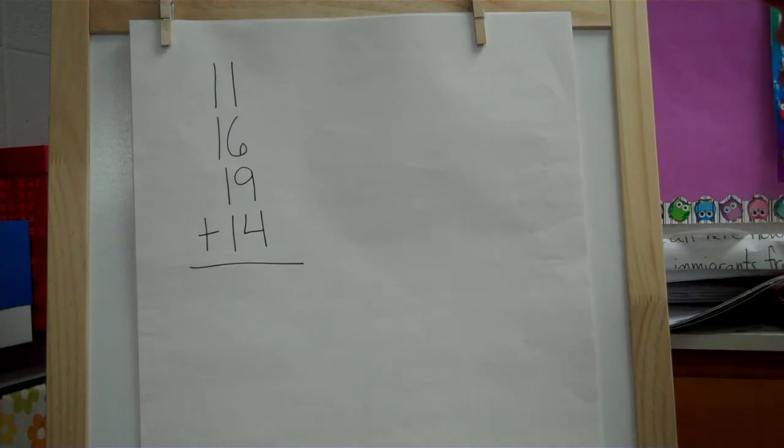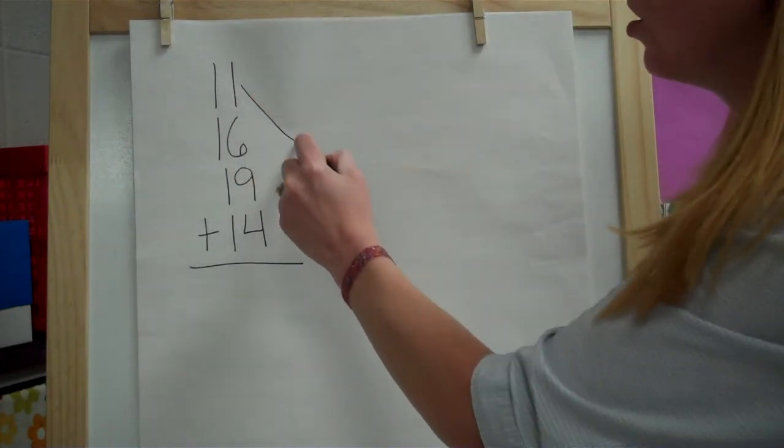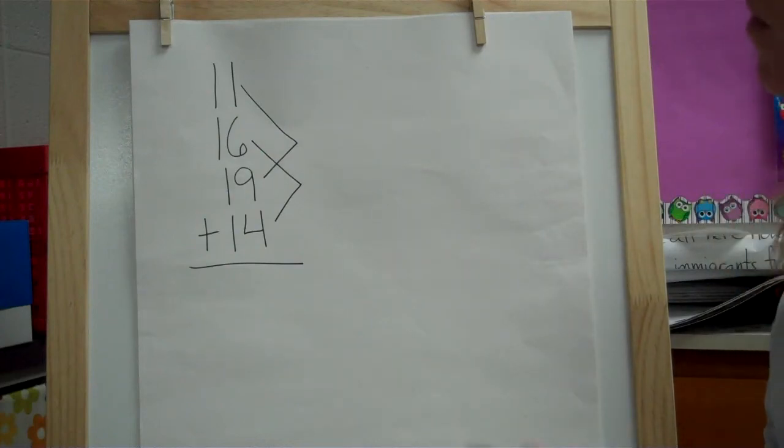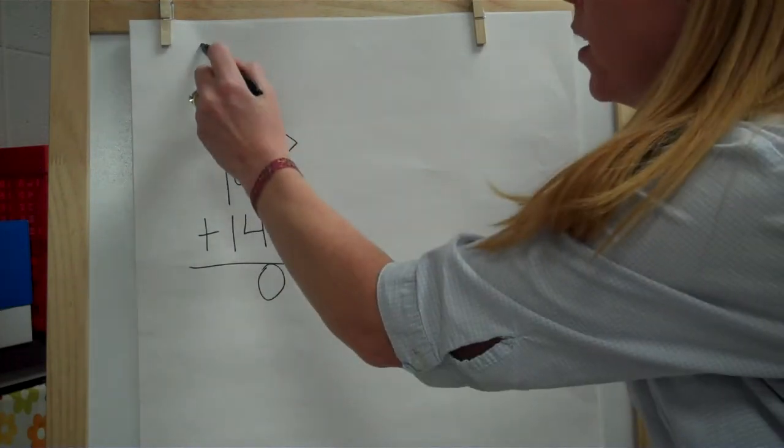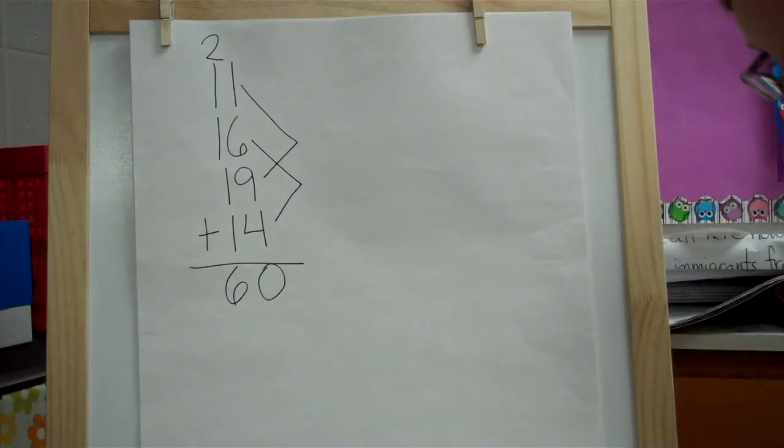Hope everybody pressed pause. So, did you find some numbers that were easy to add together? I see two right there and then I see these two here. Those both add up to 10 of course. So we've got 10 and 10, so that would be 20. And then we just add all those ones together and 2 more, and that makes 60.